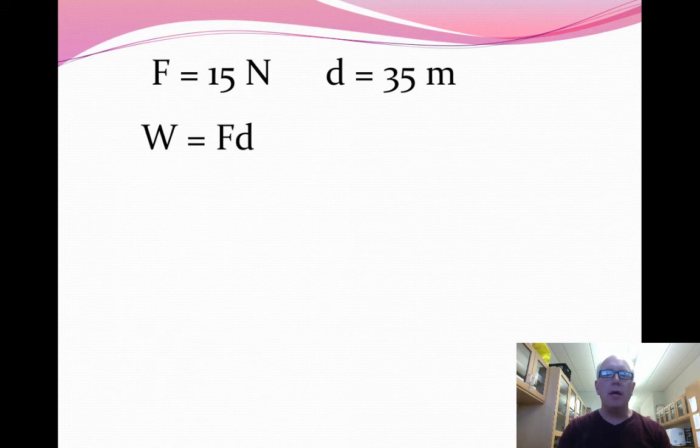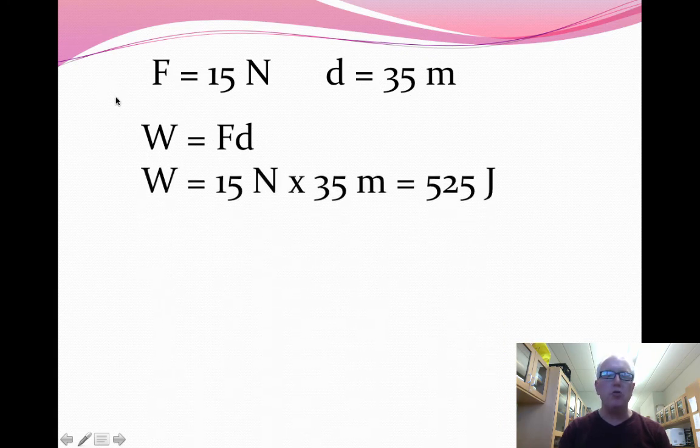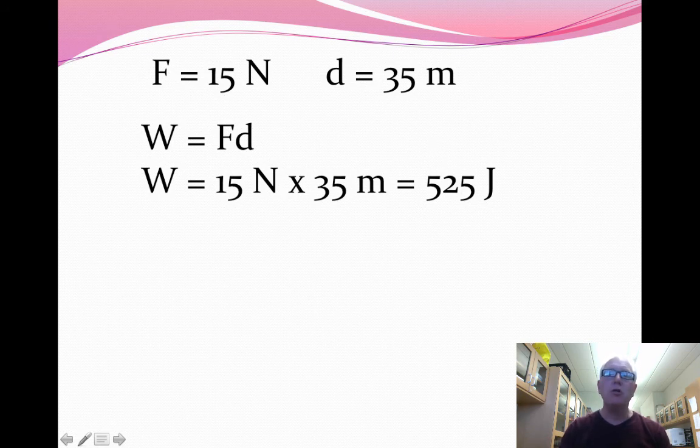So here we go. We identify the information, and then we go ahead and plug it into our equation. W is the symbol for work. We've already mentioned that joule is the unit. It's just a matter of multiplying the force by the distance, and in this case, 525 joules is the answer. How did you do? Hopefully, it makes some sense to you.